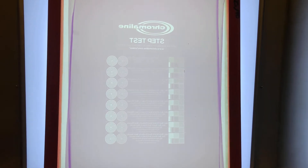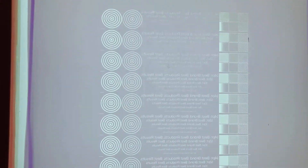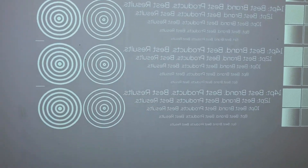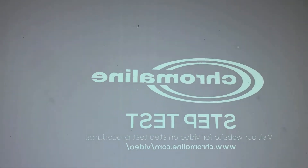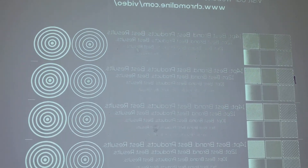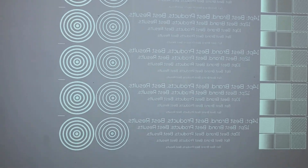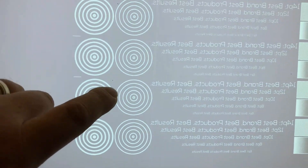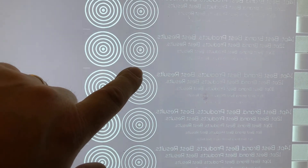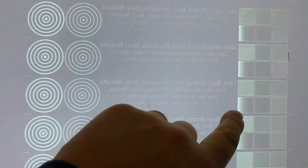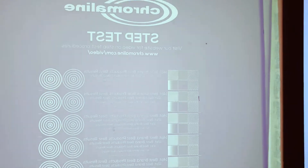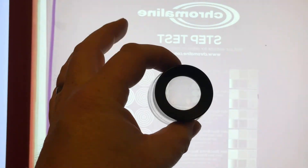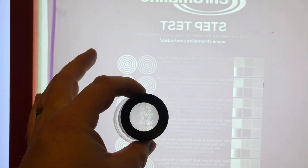Now that the screen has been developed, we're going to inspect these patches to see the proper exposure time for this given emulsion, how it was coated, mesh count, and this particular exposure unit. For each step, we're looking for the best resolution — we'll look at the text and the halftones. It's best if you have a loupe like this so you can inspect it. You're looking for good mesh bridging.